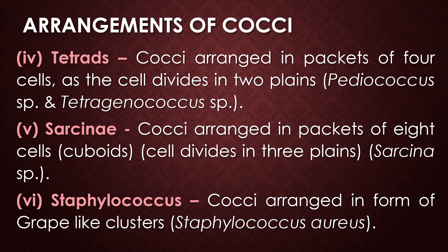The fifth type of arrangement is sarcina. It represents cocci arranged in packets of eight cells; the sarcina bacteria look like a cuboid shape, and the cell divides in three planes. The example for sarcina is Sarcina species. The final type of arrangement is staphylococcus — cocci arranged in the form of a grape-like cluster. Examples for this arrangement are Staphylococcus aureus, Staphylococcus epidermidis, etc.